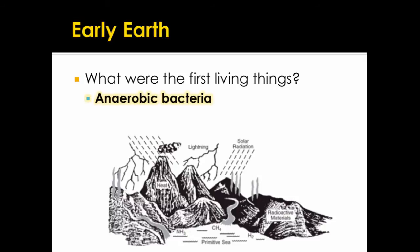Scientists think the first living things on Earth were anaerobic bacteria. The first living things were probably very simple, so bacteria are simple, and since there was no oxygen available, the bacteria would need to be anaerobic, since they don't need to use oxygen. Another way of saying this is the bacteria would be anaerobic prokaryotes, because prokaryote is the same thing as bacteria.